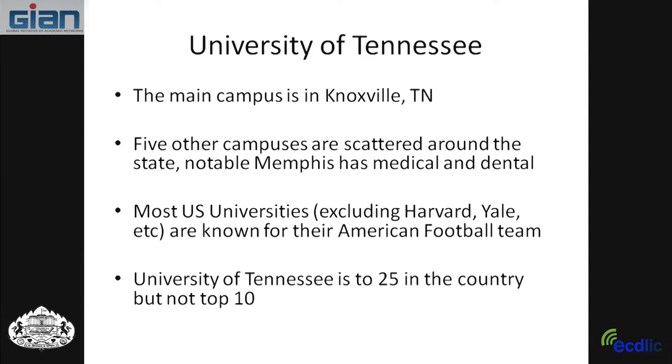Harvard and Yale are what we call private universities. They cost so much that most people don't earn that much in a year to send their children there. To go to some of those, you have to be very rich, or very poor and get a scholarship, or very bright. Otherwise you have to go to a state school. The University of Tennessee was founded by the state and is much cheaper because there's some state support, though it still costs maybe about 20% of your salary.